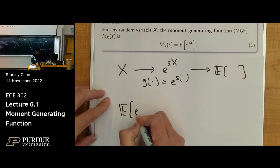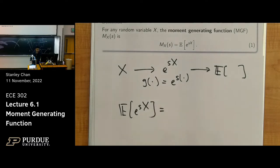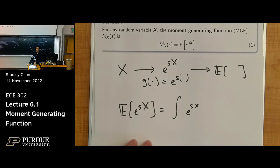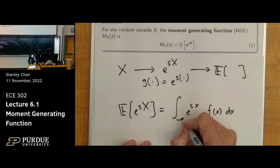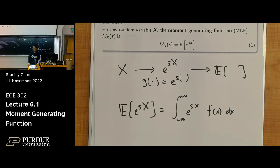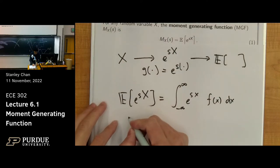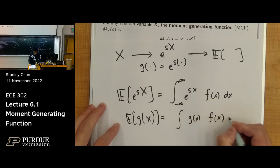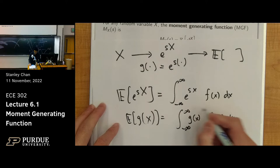Expected value of e to the SX — what is it? It's the integral from minus infinity to infinity of e^(sX) times f(X) dX. So this is the equation for this expectation. When you apply the expected value to whatever function G, you get the integration of G(X) times your distribution f(X) from minus infinity to infinity. I'm just replacing G by e to the power SX.